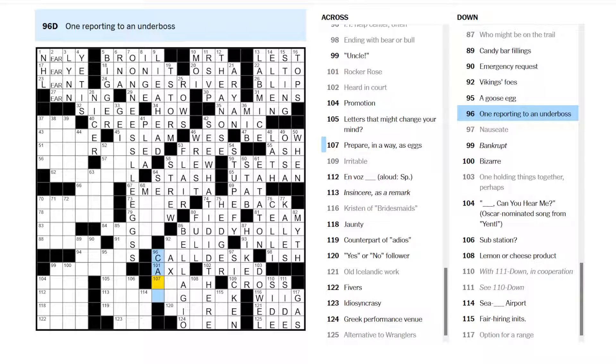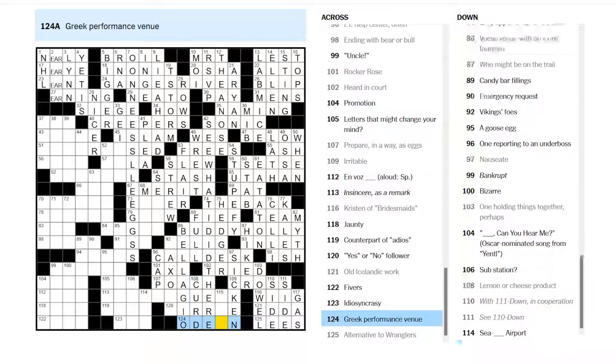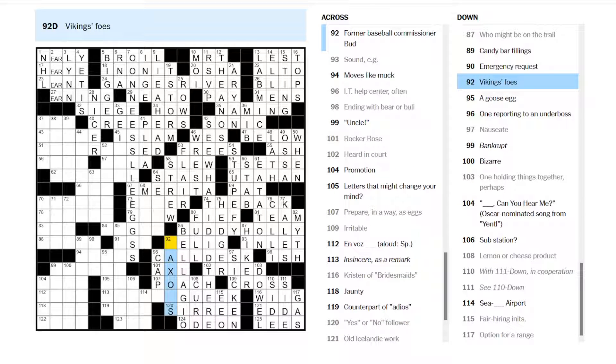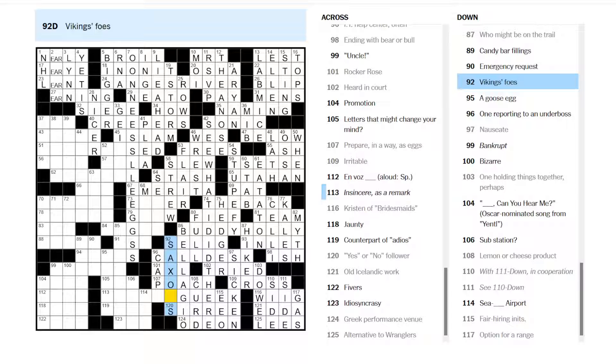When reporting to the, to an underboss. Prepare in a way is eggs. Well, you can poach eggs. Lemon or cheese product. You can have lemon curd. Cheese curd. Greek Performance Venue is an Odeon. Fair Hiring Initials are EEO. Sometimes EOE. But it looks like in this case. Yes or no follower. Yes siree or no siree.